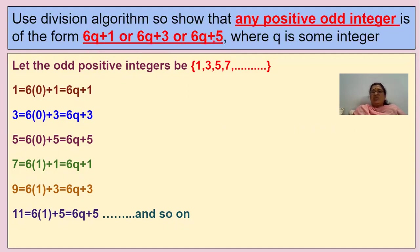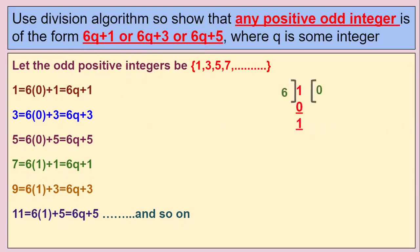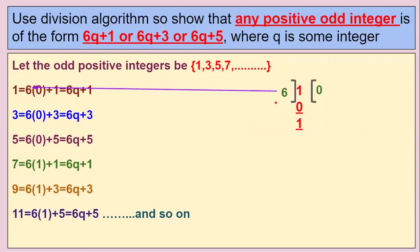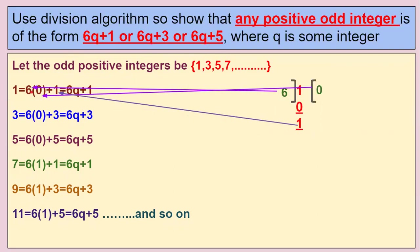So any positive odd number can be written in this form according to Euclid's Division Lemma. First we take 1 and divide with 6. You can write it as: divisor 6 into quotient plus remainder. So 1 can be written as 6 × 0 + 1. When you multiply 6 zeros as 0 and add 1, you get 1. This is in the form of 6q + 1.